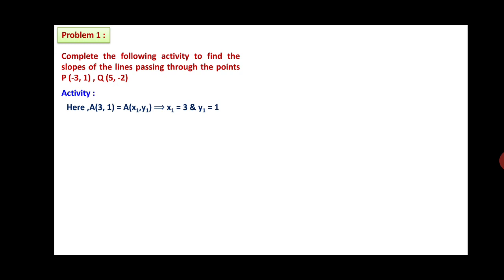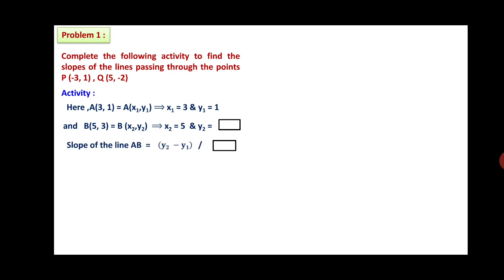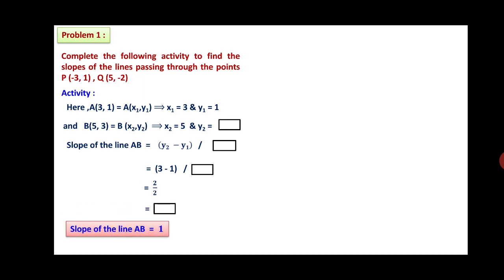In the activity, A(3, 1) is written as A(x1, y1), so x1 equals 3 and y1 equals 1. Also B(5, 3) is written as B(x2, y2), therefore x2 equals 5 and y2 equals 3 — you write that value in the box. Slope of line AB equals (y2 minus y1) divided by (x2 minus x1), which equals (3 minus 1) divided by the value you write in the denominator, giving 2 by 2. The result — slope of line AB — equals 1.